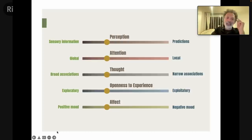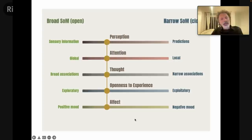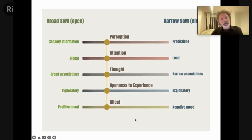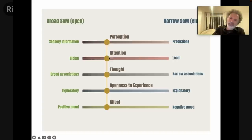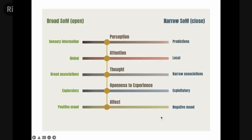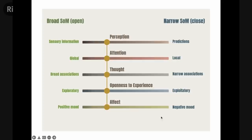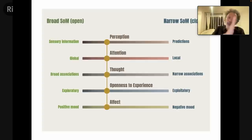All these dimensions can slide, and the big issue is that they're actually connected. Through a lot of research, not only in my lab but in several others, we've shown correlations between all these dimensions of cognition and concluded that they're all tied together, forming our state of mind. When our perception is all the way to the broad state of mind, then attention, thought, openness to experience, and affect will also be on the same side. When we gravitate toward the narrow state of mind — where perception relies more on predictions — attention will be more local, thought more narrowly associative, we'll be more exploitative, and our affect will be more negative.